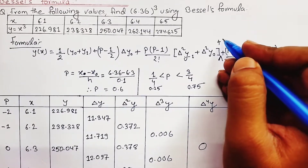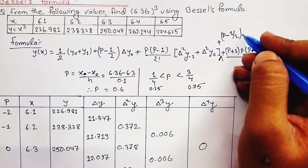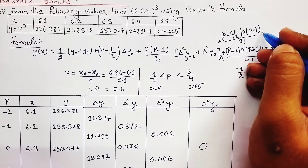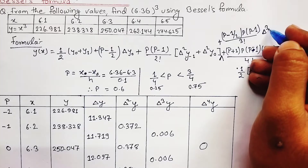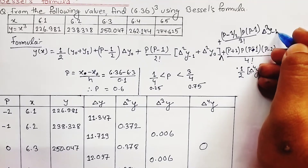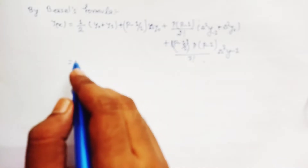The third term is (p − 1/2)·p·(p−1) / 3! multiplied by Δ³y₋₁. The fourth term is zero since Δ⁴y = 0, so we stop here and proceed to substitute the values to find the final answer.